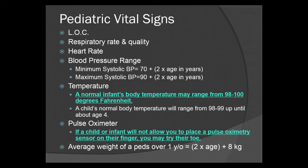You're going to assess the temperature. Keep in mind, a normal infant's body temperature may range anywhere from 98 to 100 degrees Fahrenheit — do not be alarmed, this is normal for an infant. A child's normal body temperature will range from 98 to 99 up until about the age of 4, then they'll start regulating to around 98.6 degrees.